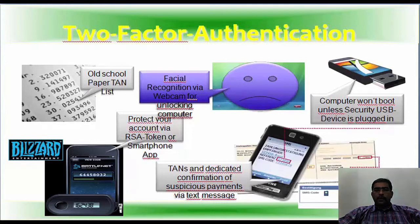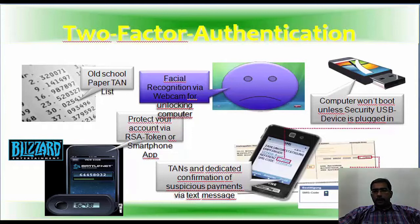On mobile phones, protect your account via RSA token or several apps available on Android and iOS markets. There is also dedicated confirmation of suspicious payments via text messages. In the banking industry, banks give corporate customers a token similar to RSA or WASCO — this came in the early 2000s with HSBC.